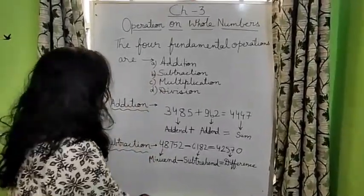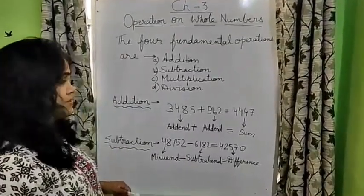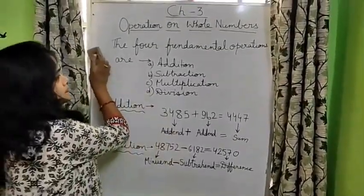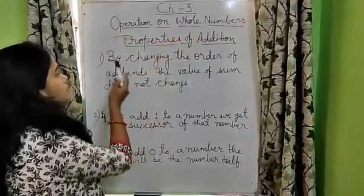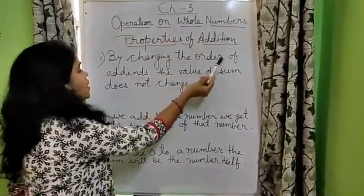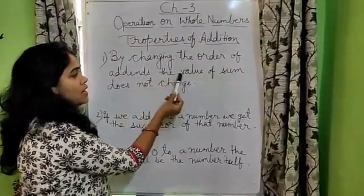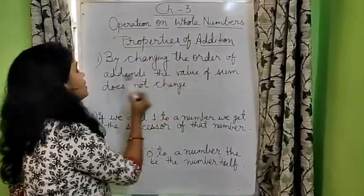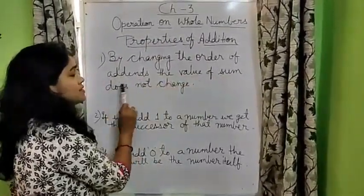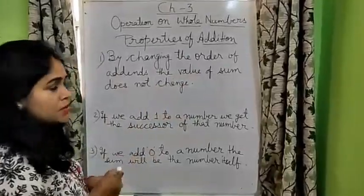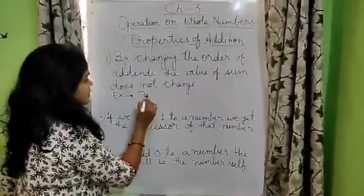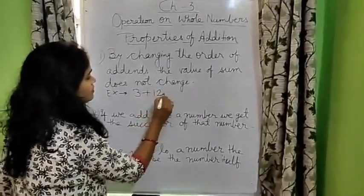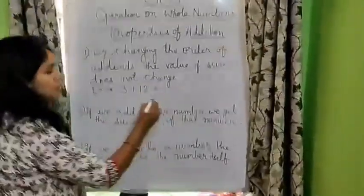Let me explain you some properties of addition. Now I will explain you properties of addition. By changing the order of the addends, the value of sum does not change. I am giving you example, this smaller number, 3 plus 12. What is the result? 15.